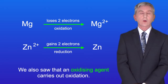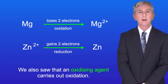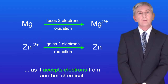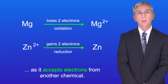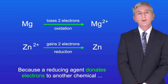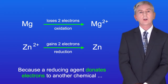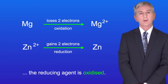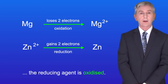We also saw that an oxidizing agent carries out oxidation, and in a reaction the oxidizing agent is reduced as it accepts electrons from another chemical. A reducing agent carries out reduction, and because a reducing agent donates electrons to another chemical, the reducing agent is oxidized.